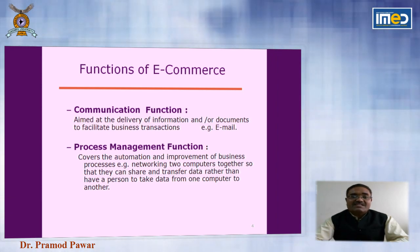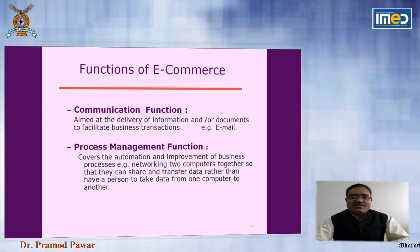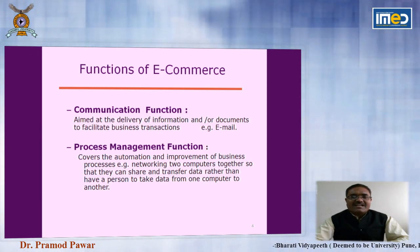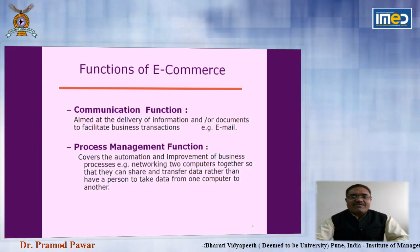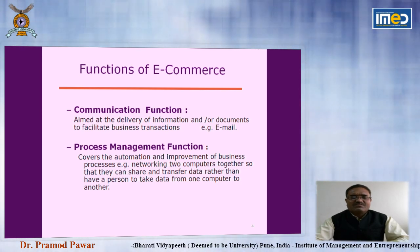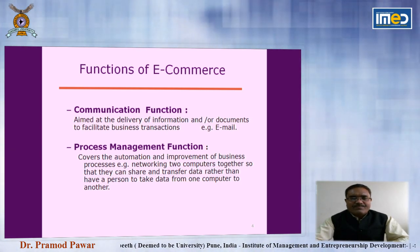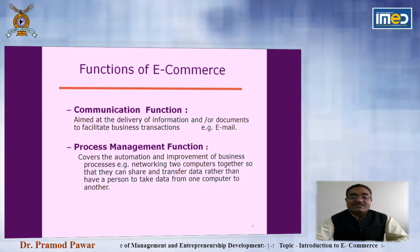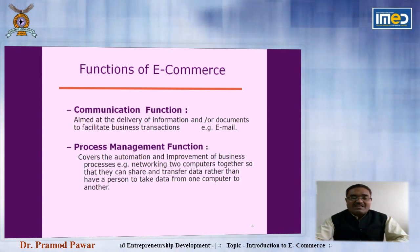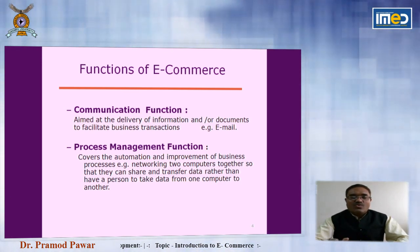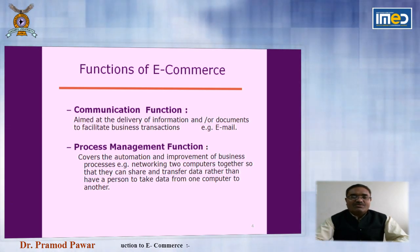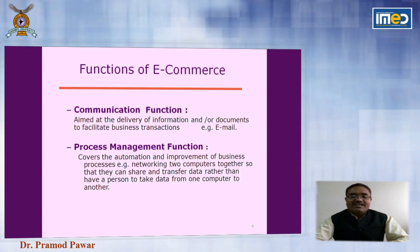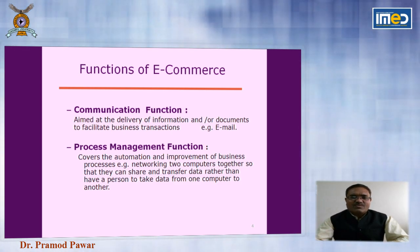The second function is the process management function. It covers the automation and improvement of business processes — for example, networking two computers together so they can share data and transfer data, rather than having a person take data from one computer to another. So this is the process management function.